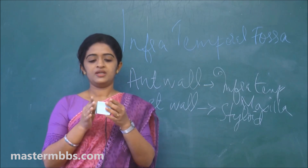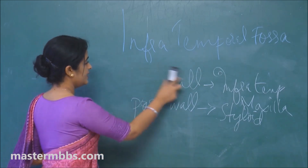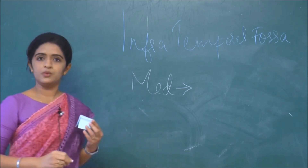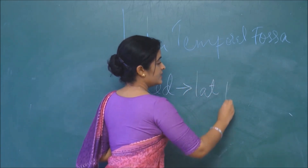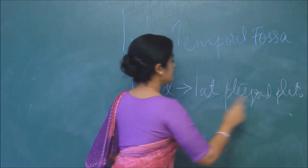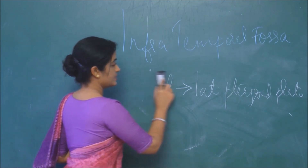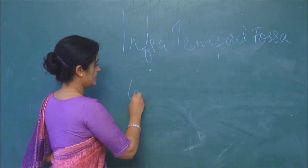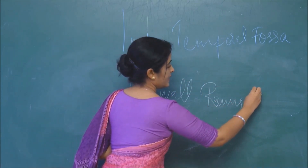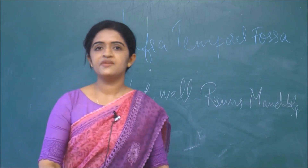The medial wall of the infratemporal fossa is formed by the lateral pterygoid plate - a thin plate of bone. The lateral wall is formed by the ramus of the mandible. These are the five boundaries of the infratemporal fossa.